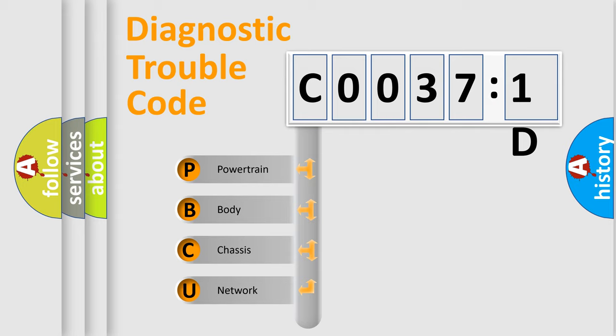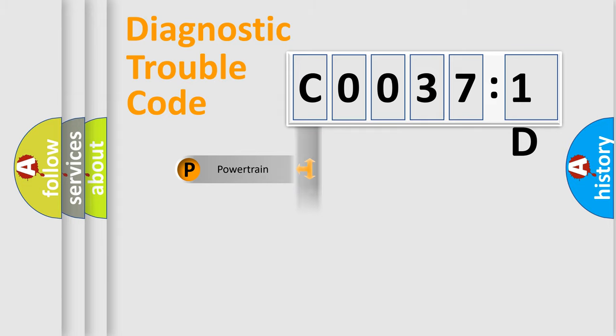We divide the electric system of automobile into four basic units: Powertrain, Body, Chassis, and Network.